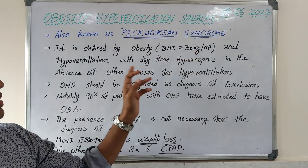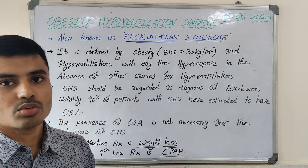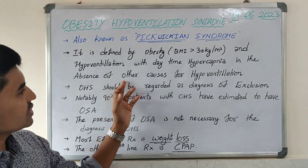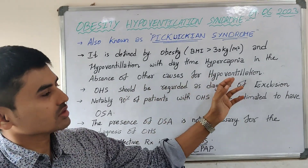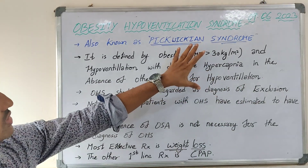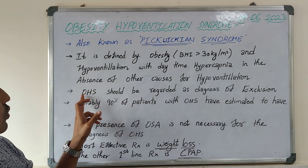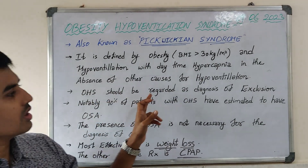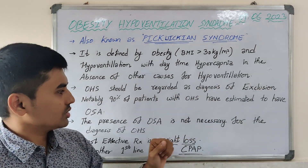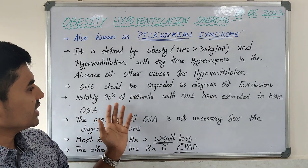The formal diagnostic criteria are: BMI more than 30, daytime hypercapnia with PCO2 more than 45, and absence of other causes of hypoventilation. From these formal diagnostic criteria, OHS should be regarded as a diagnosis of exclusion.